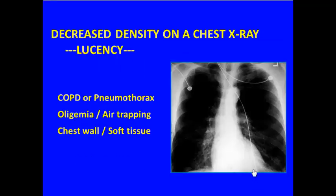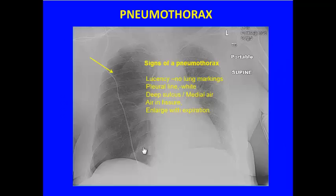Decreased density on the chest x-ray — sometimes we use the term lucency. Typically we're going to worry about things like pneumothorax, but also COPD and various causes for air trapping can give you relative decreased density in the lungs, and there are some things in the chest wall or soft tissues that can cause that.